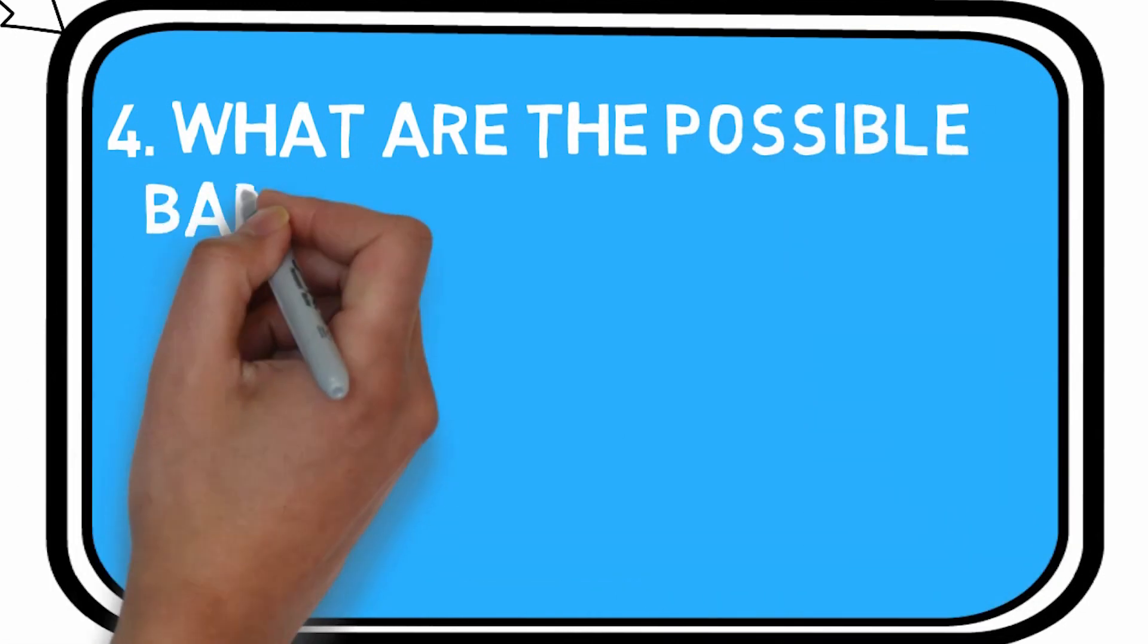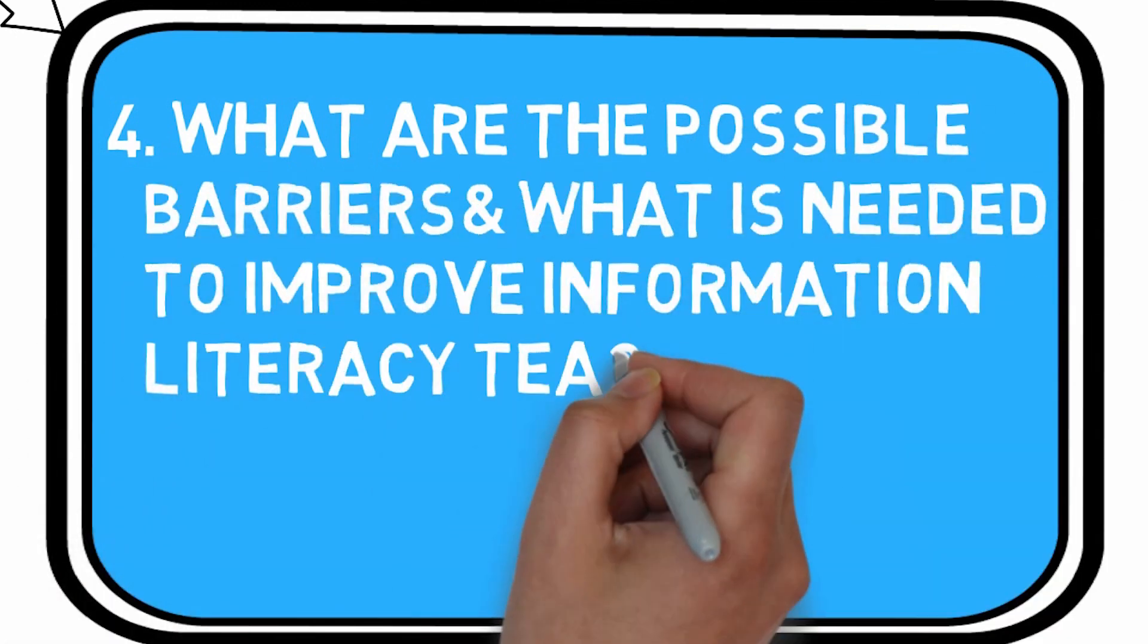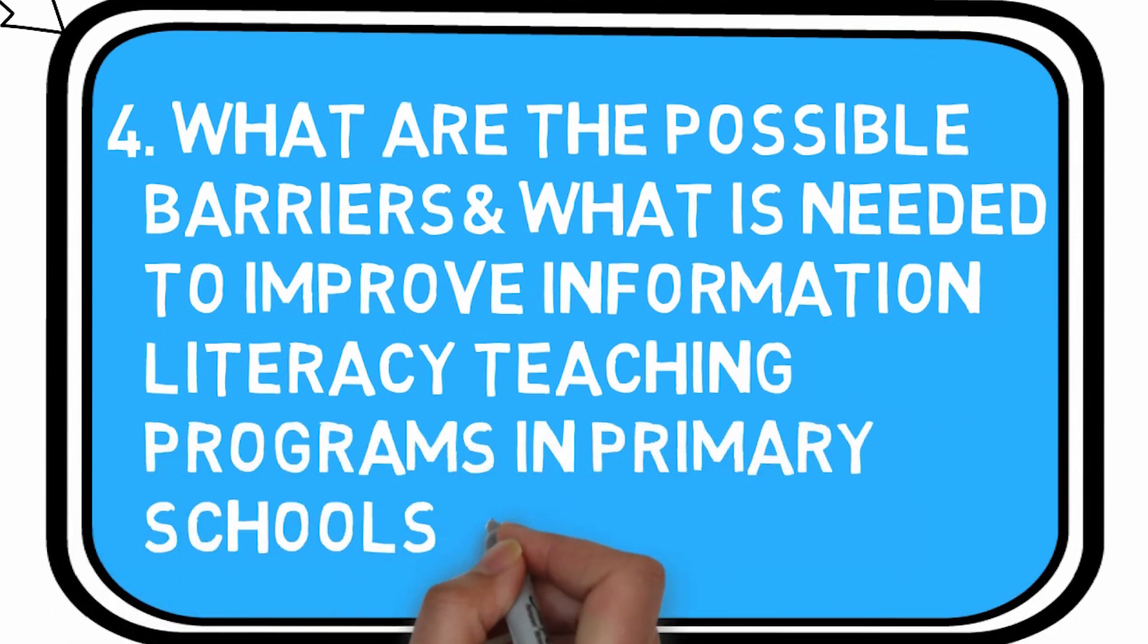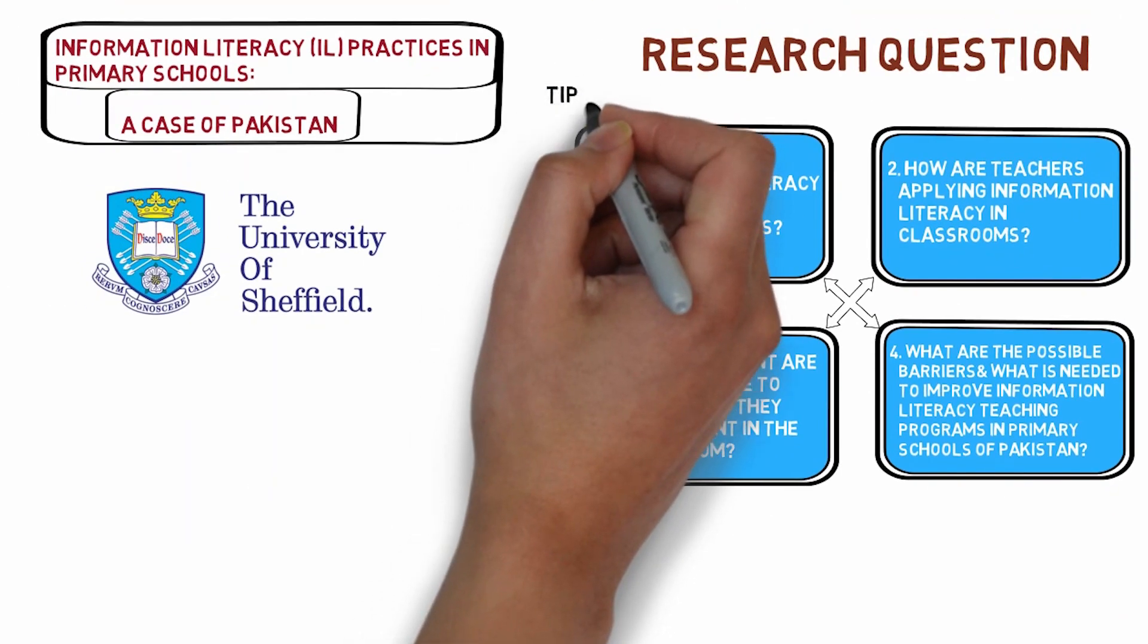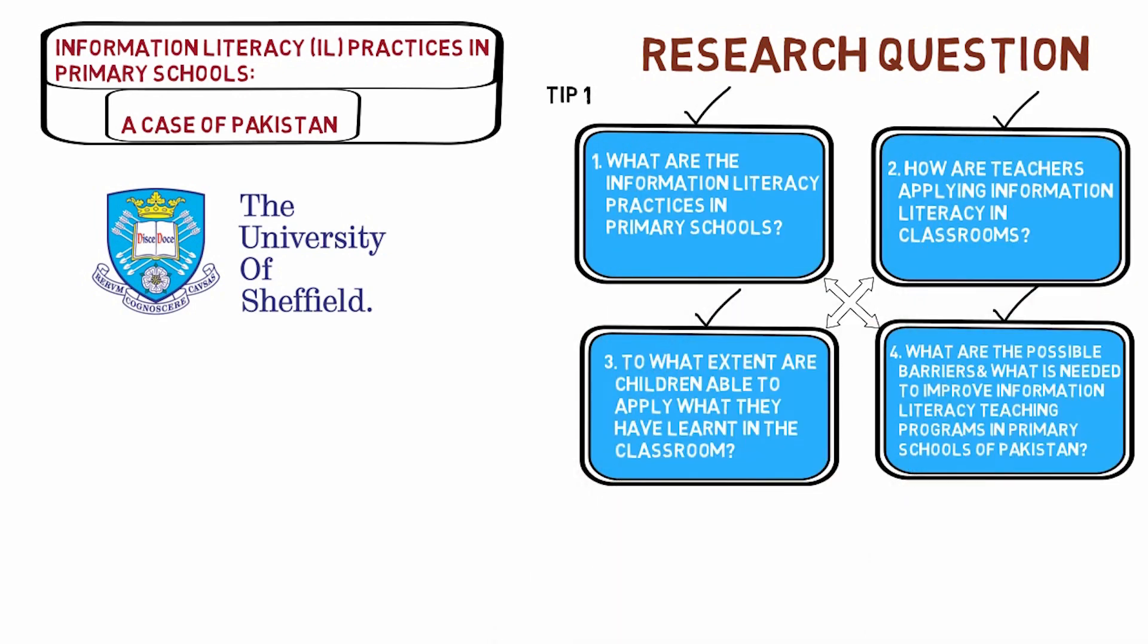Number four: What are the possible barriers and what is needed to improve information literacy teaching programs in primary schools of Pakistan? So viewers, first tip is that these four research questions can be turned into four different potential articles or more than four even.